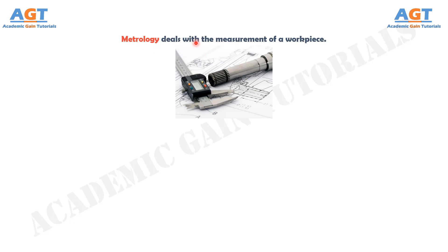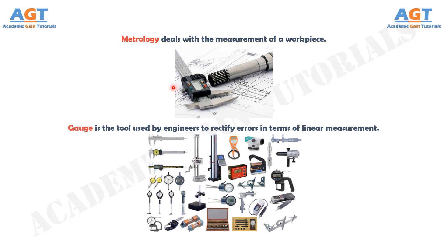For removing those errors from a workpiece, some measurement tools are devised by engineers such as surface texture measurement device, tolerance measurement device, screws threads measurement device and so on. Gauge is the tool used by engineers to rectify errors in terms of linear measurement. Linear measurement deals with measuring lengths, heights, diameters, etc. It is also used by engineers to secure variance in a workpiece. In this assessment, gauge and its types are critically analyzed briefly in all the possible ways.